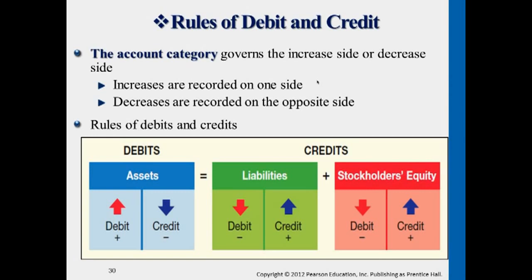Remember, accounts represent either a particular type of asset, a particular type of liability, or a particular type of equity. Accounts represent the changes in a certain type of asset, liability, or equity, so we capture account changes in the ledger. The ledger is a book of T-accounts, so you'll be able to see certain accounts that were involved in a lot of transactions, and perhaps some accounts were not as much affected.